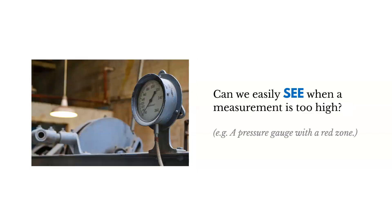Here's another example. Can we easily see when a measurement is too high? Perhaps we have a pressure gauge with a red zone — it helps to know that we have a problem. It might be nice if someone who's not an expert is looking at these things; they know just by looking at the visual cues, the red area on the gauge, that if the indicator is there, we have a problem. It helps to easily see when a measurement is too high.